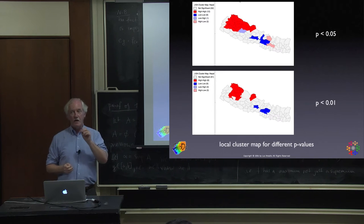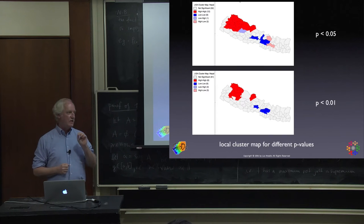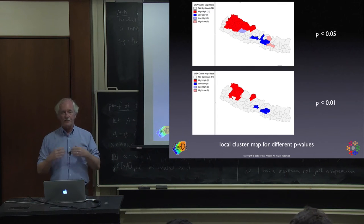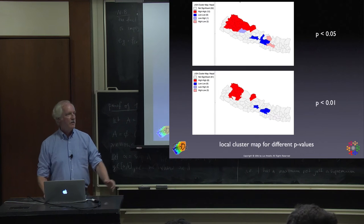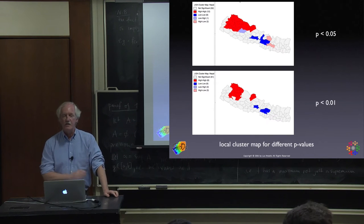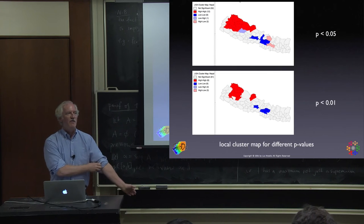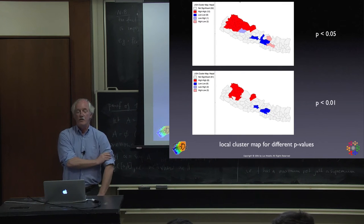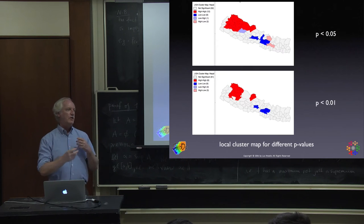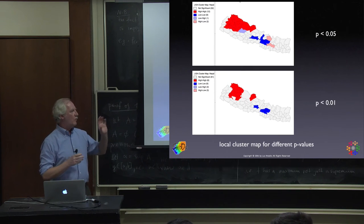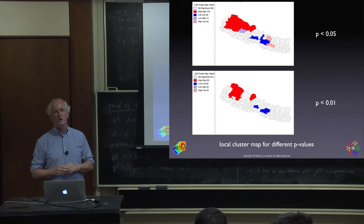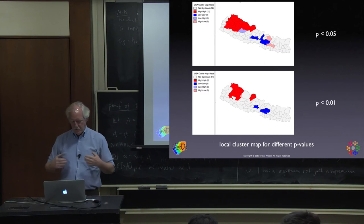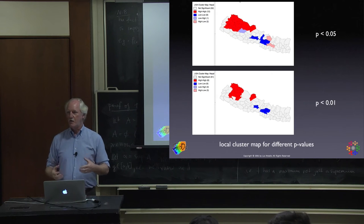If outliers don't disappear as you tighten p-values, they're really interesting locations — they suggest spatial heterogeneity, something different from the rest of the pattern. This local cluster map is my favorite device for exploratory spatial data analysis. You can literally start seeing connections between different variables — where high values cluster, where low values cluster, and whether clusters coincide across variables. It's a great initial shortcut to learn from the data.